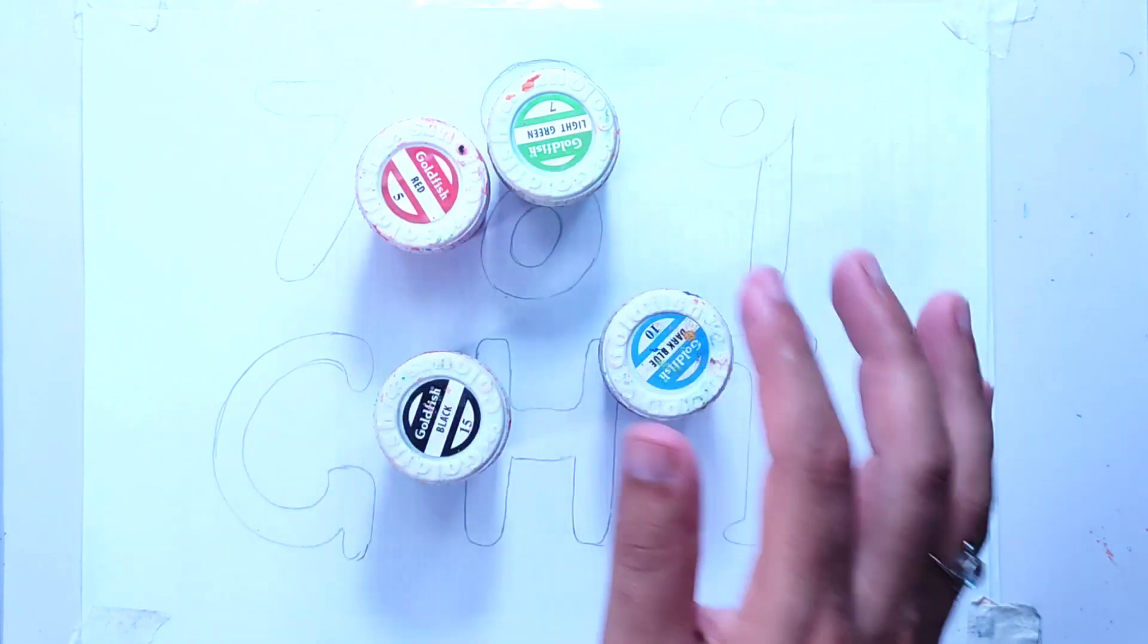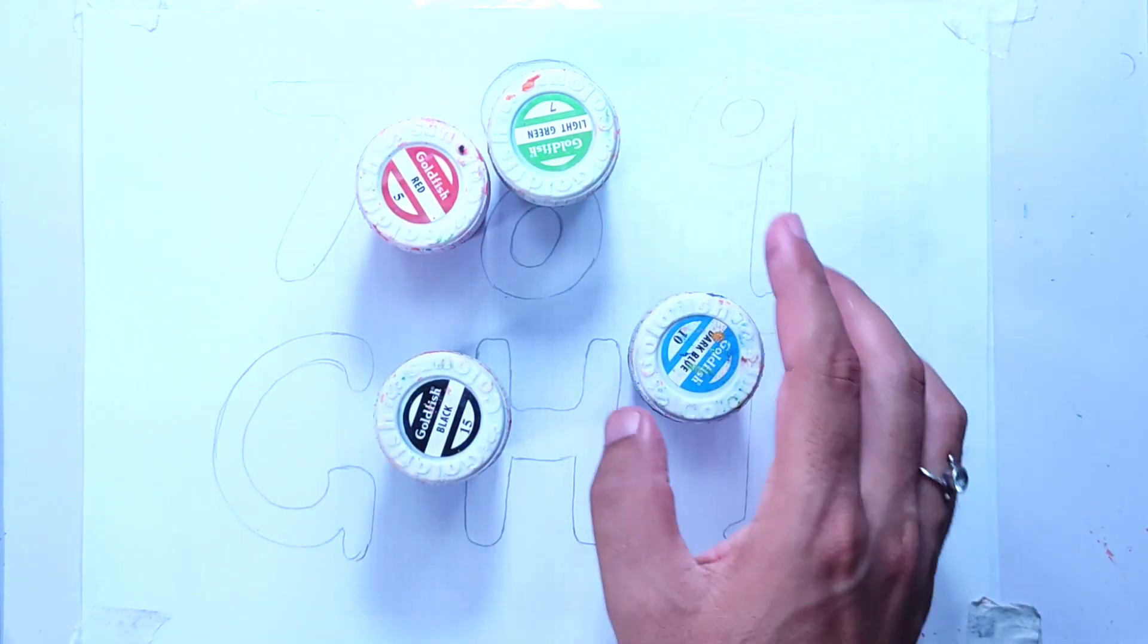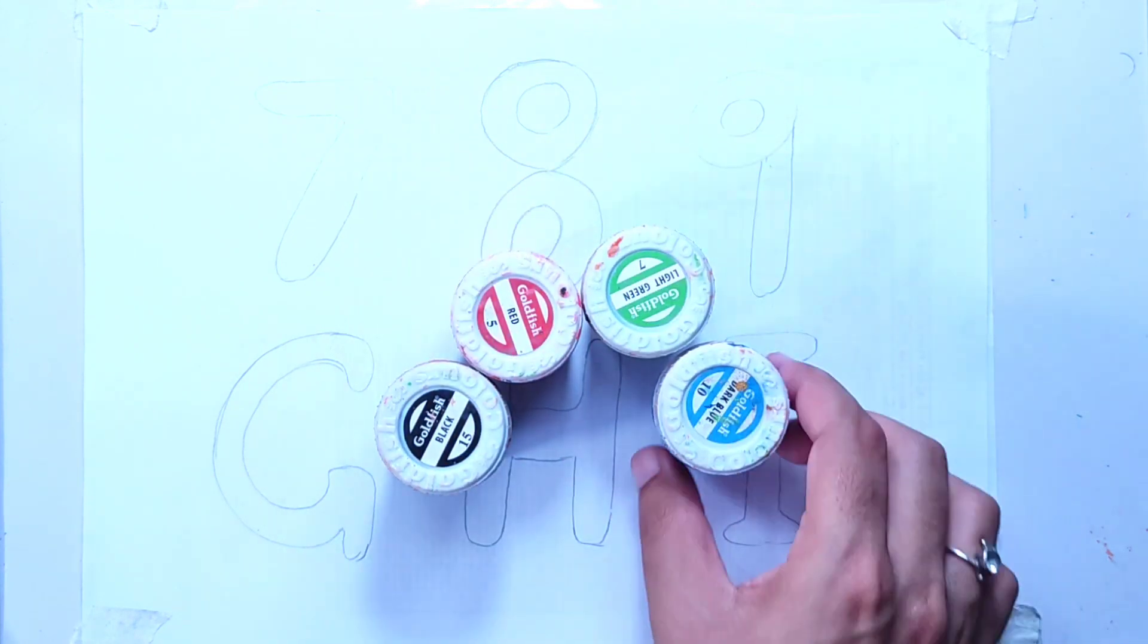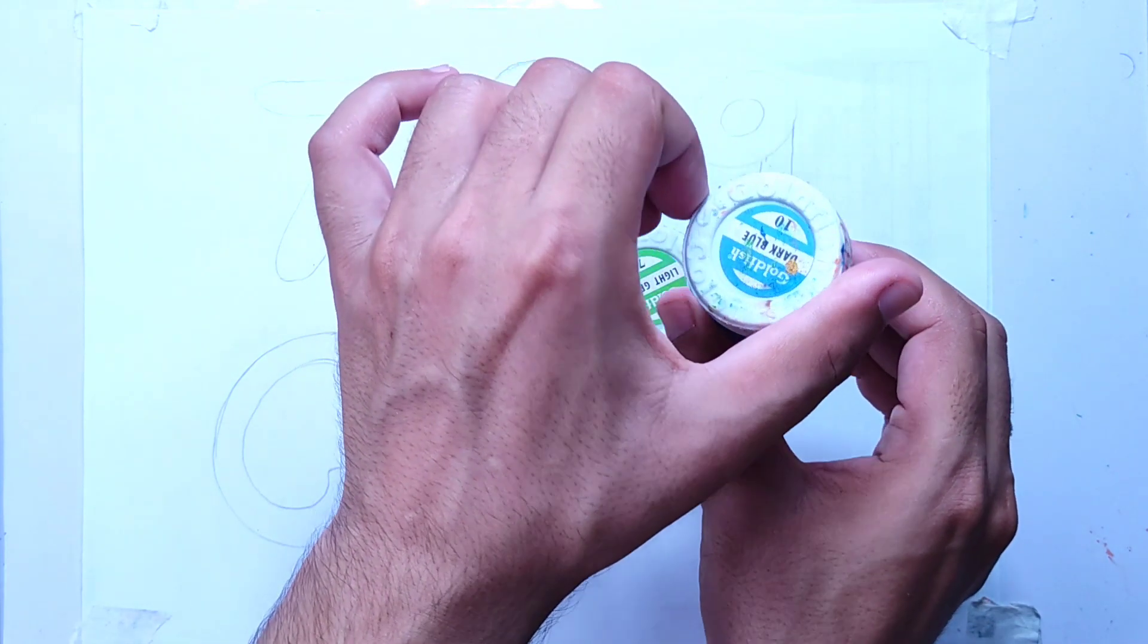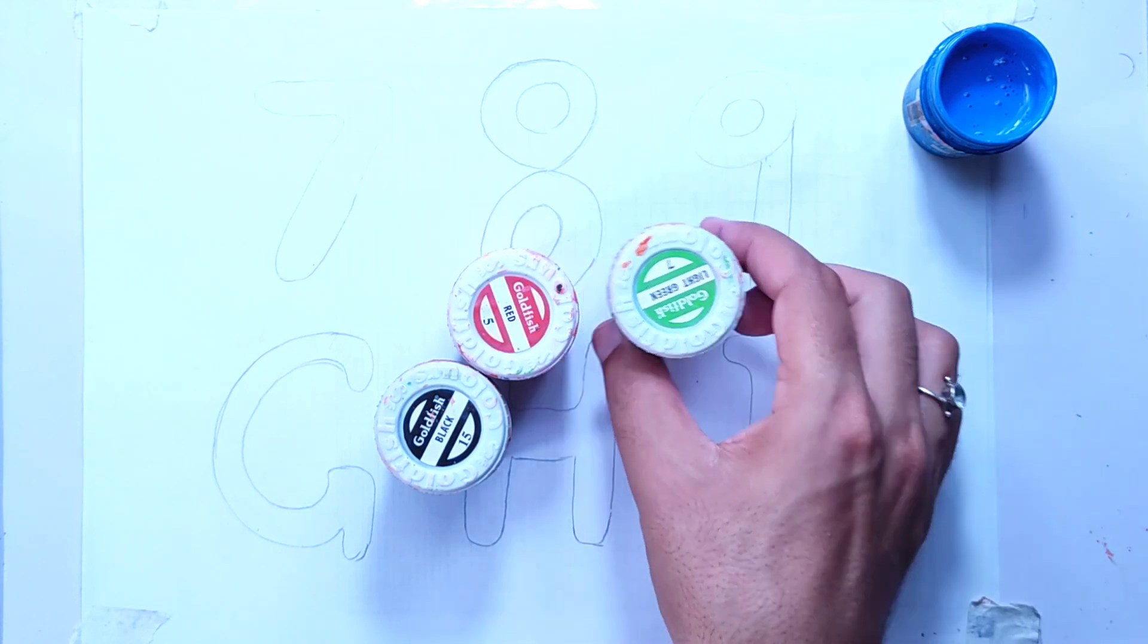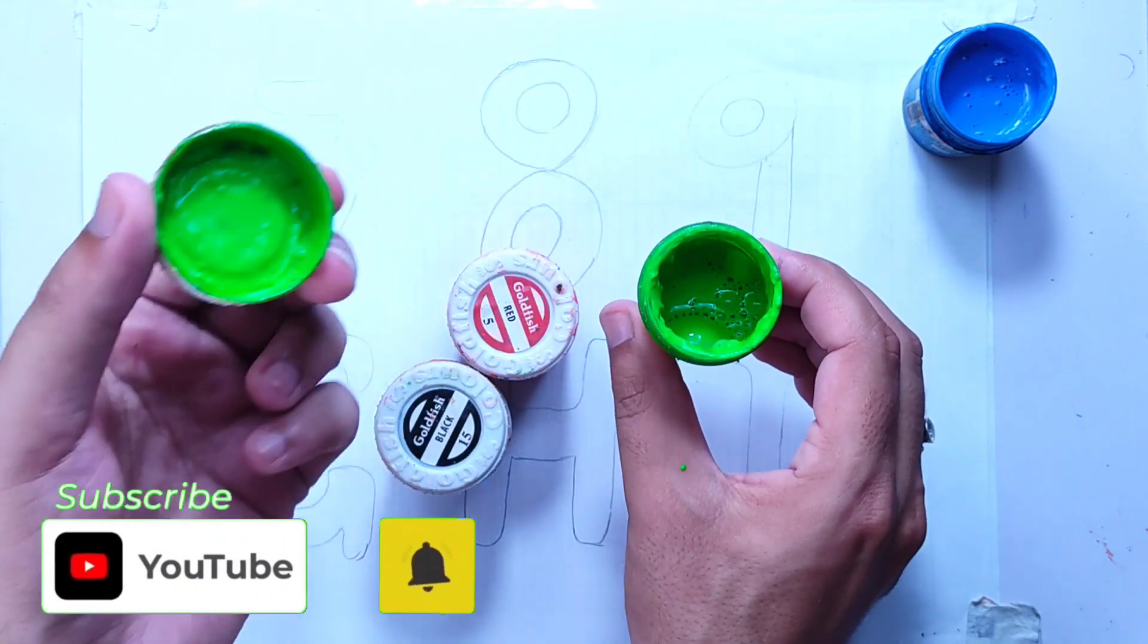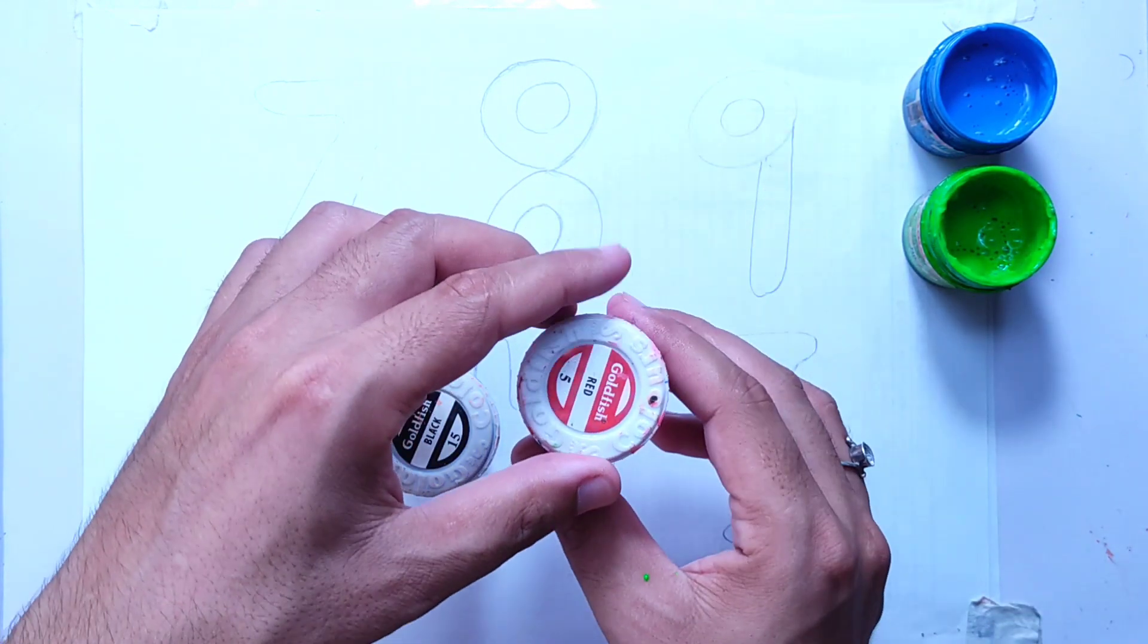Hello kids, welcome to Kids Education with Fun. In this video we are drawing numbers 7, 8, 9 and letters G, H, I. Here we have dark blue color, light green color, and red color.